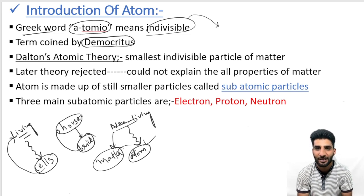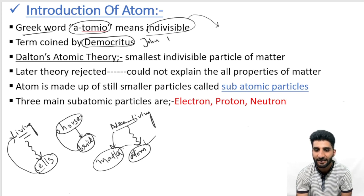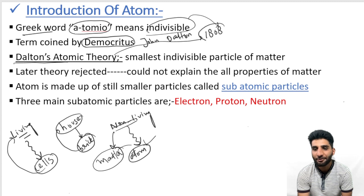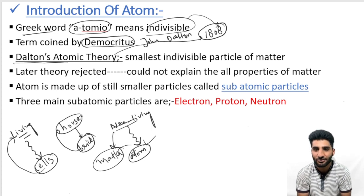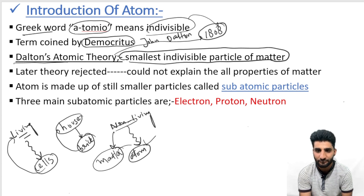These two points are important — focus on them. Now let us go to the definition of atom. The first definition of atom was given by John Dalton in the form of Dalton's atomic theory, which was published in 1808. According to this theory, matter is made up of indivisible particles, and we call these particles as atoms. We can also say that an atom is the smallest indivisible particle of matter.